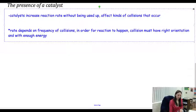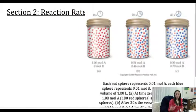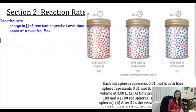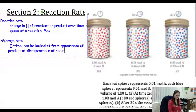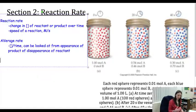Now on to section two, which deals with actual reaction rates. A reaction rate is the change in concentration of a reactant or a product over time — it's the speed of the reaction, expressed as so many molarity per second. Average rates are concentrations over time, and they can be looked at from the appearance of a product or the disappearance of a reactant. When we talk about a reaction rate, we always express these in terms of a positive number, so if it's decreasing over time, we still make it a positive number.